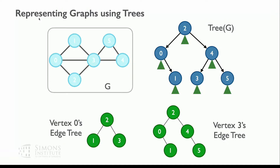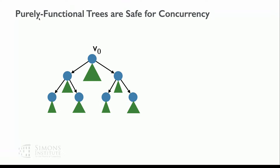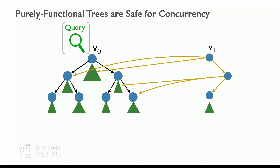Once we have our graph represented as purely functional nested trees, we get a graph representation that is safe for concurrency. If a query has serialized itself on a snapshot of the graph and an update comes later and modifies the graph, the query is immune to this modification — it doesn't see what happens in the modification. Even though the query is very long-running, we can start updating the graph while the query is running, because we just point back to old copies of the graph and don't actually modify them.